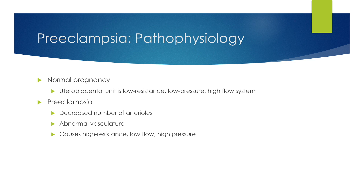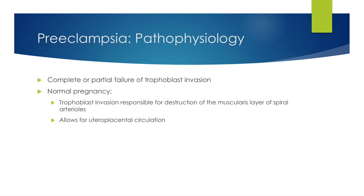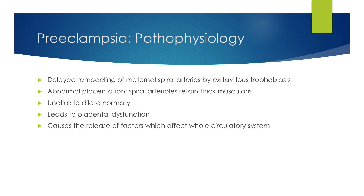In a normal pregnancy, the uteroplacental unit is low resistance, low pressure, and a high flow system. In preeclampsia, there is a decreased number of arterioles and abnormal vasculature, causing high resistance, low flow, and high pressure. Part of the pathophysiology is a complete or partial failure of trophoblastic invasion. In a normal pregnancy, trophoblast invasion is responsible for destruction of the muscularis layer of the spiral arteries, allowing for uteroplacental circulation. In preeclampsia, there is delayed remodeling of maternal spiral arteries by the extravillous trophoblast. This abnormal placentation causes the spiral arteries to retain a thick muscularis, unable to dilate normally, leading to placental dysfunction and release of factors affecting the whole circulatory system.